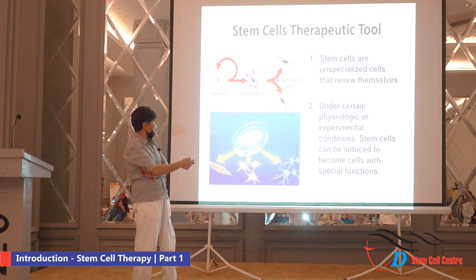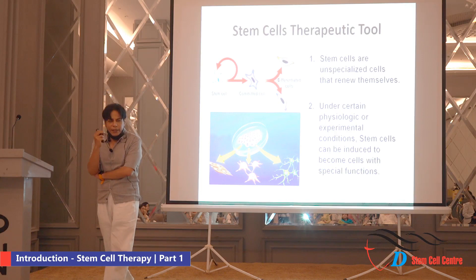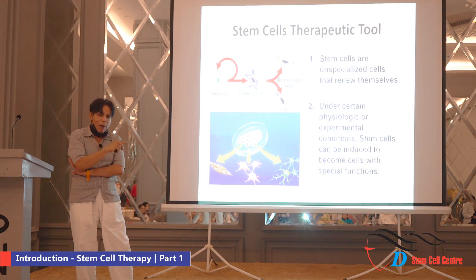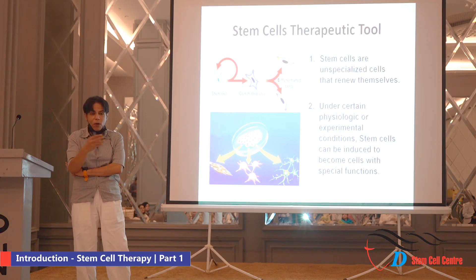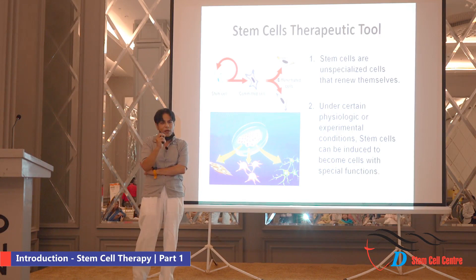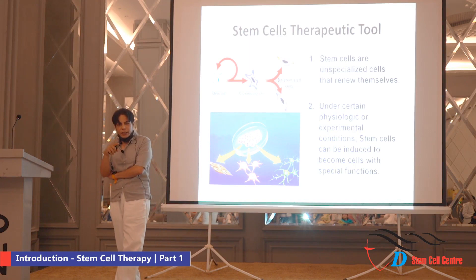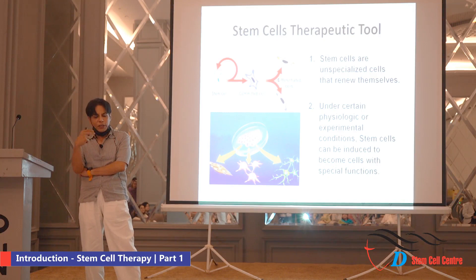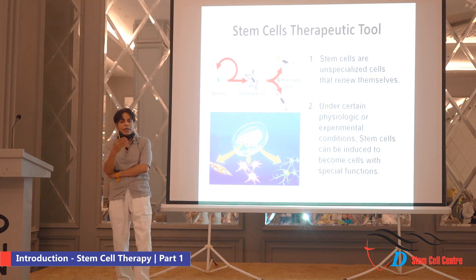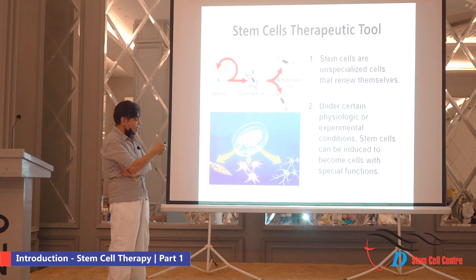Stem cells have these two very remarkable abilities. They are themselves unspecialized — you can think of these cells as they haven't gone to school yet, they are just in nursery. However, they can be trained to become a doctor, a lawyer, or a policeman, or whatever you want them to be. They are unspecialized, and because they are unspecialized, they can make many, many copies of themselves. The degree of specialization is inversely proportional to the ability of a cell to divide. Very highly specialized cells completely lose their ability to divide — for example, neurons do not go through mitosis. So these cells are relatively unspecialized, which gives them the ability to make many copies of themselves.